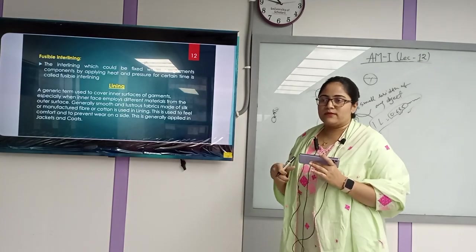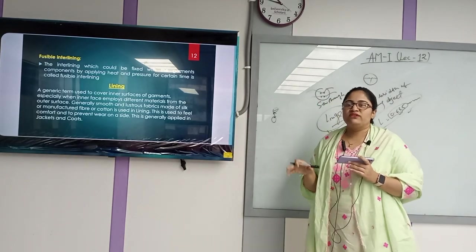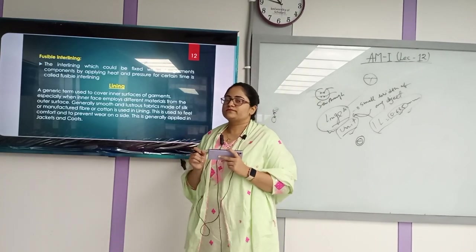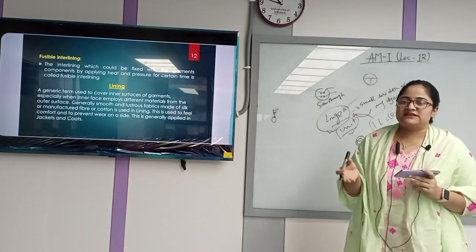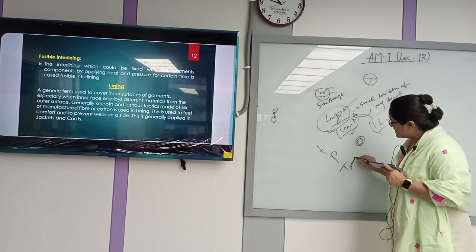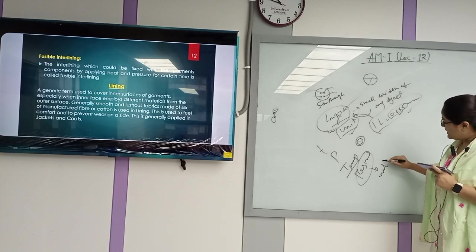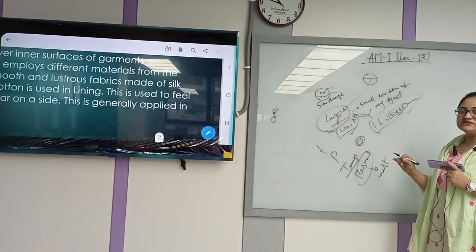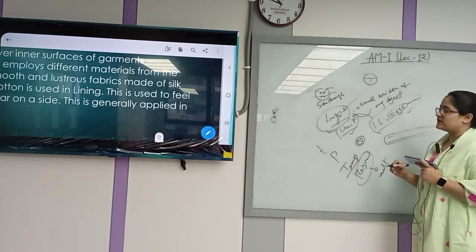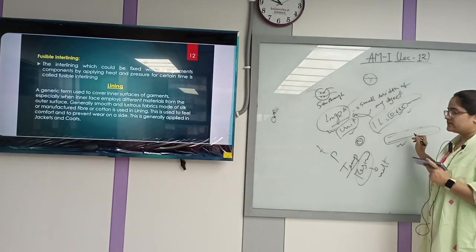The fusible interlining uses heat and pressure. The resin component — what is the resin component? It's a material. The resin component is a blue-type material. It's an interlining with resin. It's non-fusible with starch, and it's fusible with resin material. When you get the resin, you can use heat and pressure to create the fusible bond.